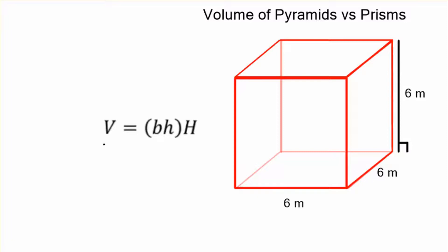And we just plug that into our formula. Volume is going to equal base times height, 6 meters times 6 meters, times the height of the entire prism, 6 meters.